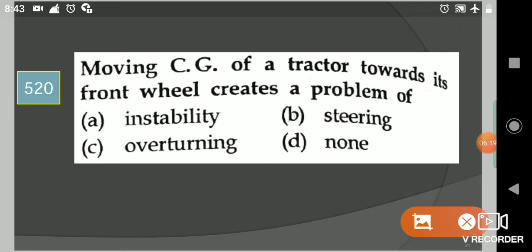Next question: Moving CG of a tractor towards its front wheel creates a problem of? Your options are instability, steering, overturning, none. Your answer is option B, steering.